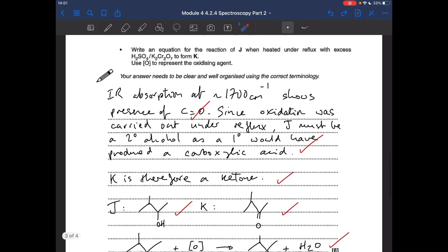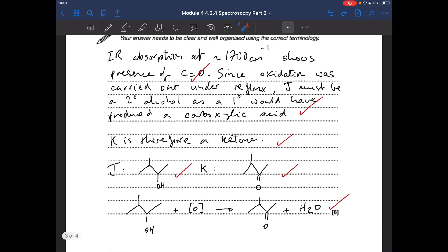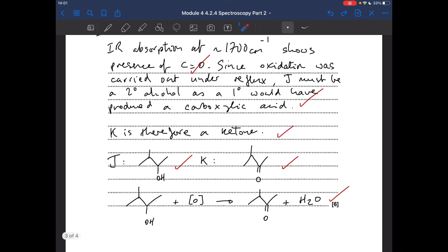Now remember, it's got to be a branched chain alcohol with five carbons. So you've got a main chain of four carbons. So there's only one place the branch can be and that's there. If it was here, that would be a tertiary alcohol, which obviously can't be oxidized. So that's J. So when you oxidize this, the OH group goes to the C=O group. So that's K. And the equation, again, I've gone skeletal. It's my preferred way of doing it. So one mole of oxidizing agent, one mole of water.